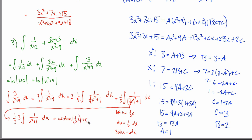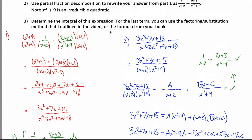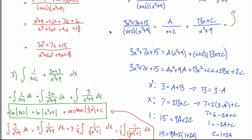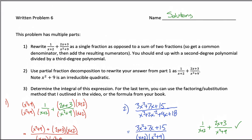Substituting: I have one third times three times the integral of one over u squared plus one du. The one third and three cancel, leaving the integral of one over u squared plus one, which is the arctangent of u. Since u equals one third x, this is the arctangent of one third x. That completes the side work, giving the final answer. It's a messy-looking written problem, but hopefully there's enough here that you can follow it.